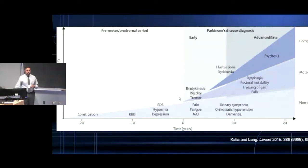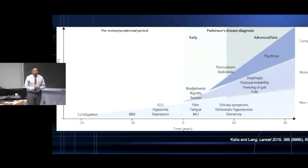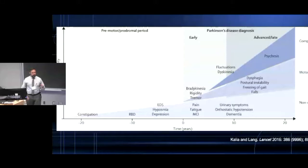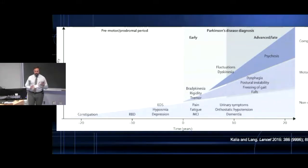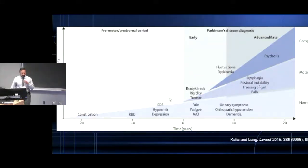REM sleep behavior disorder is a syndrome where you lose the normal paralysis that occurs during sleep. While you're dreaming at the deepest level of sleep — REM sleep, rapid eye movement sleep — you're supposed to be completely paralyzed. People with REM behavior disorder actually start to act out their dreams, which can be quite distressing. If you don't ask about it, you never hear about it, because no patient thinks it's related to their shaking. When you ask, you can quite consistently find REM behavior disorder predating the onset of Parkinson's by seven to ten years in many patients.